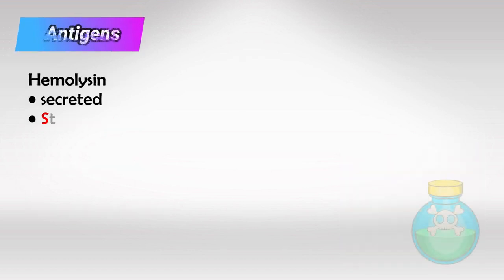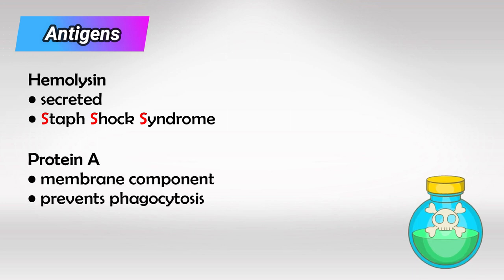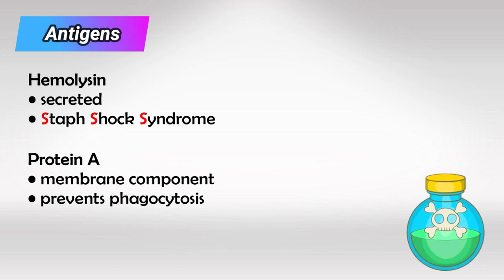The bacteria has two main antigens: hemolysin which the bacteria secretes to form the superantigen that causes the Staphylococcus shock syndrome, and protein A. Protein A is not secreted like hemolysin but rather is a membrane component of the peptidoglycan layer. It prevents the attachment of immunoglobulins and the phagocytosis process.